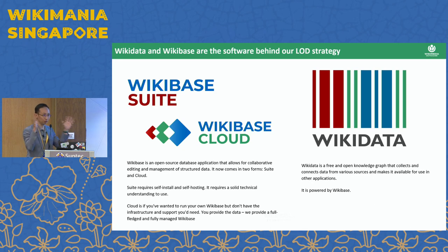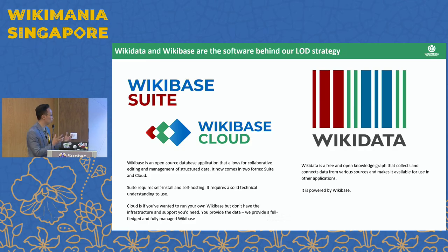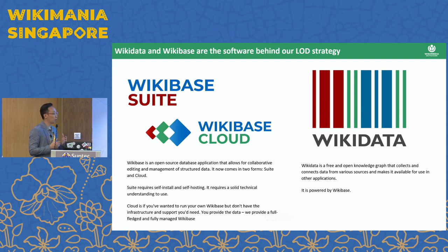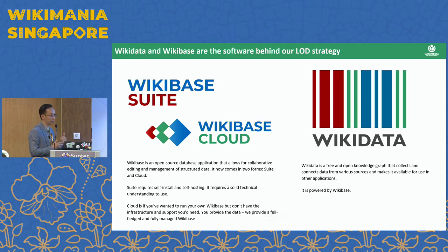Wikibase, in short, is a software that is powering and running Wikidata. Wikibase is an open source database application that allows for collaborative editing and management of structured data, just as you can do on Wikidata. Wikibase Suite requires the user to self-install the software onto your own database and requires self-hosting, which requires solid technical understanding. However, if you do not have a strong technical background, we have Wikibase Cloud — a cloud-hosted Wikibase instance that you can sign up for and be part of the linked open data web.